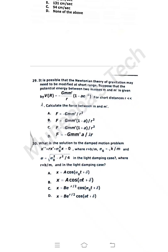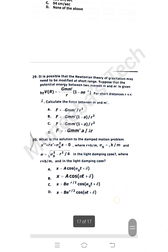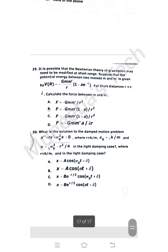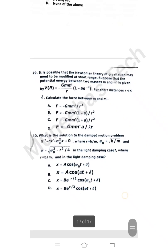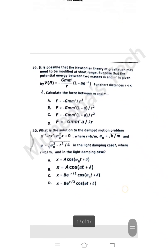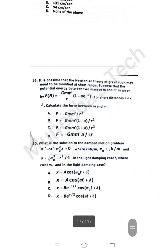Question 30: What is the solution to the damped motion problem where r = b/m and ω₀ = √(k/m) and ω = √(ω₀² - r²/4) in the light damping case? In the light damping case, option A is correct and I'm sure about that because in oscillation we use ω but in case of damped oscillation we use ω₀. So option A is correct.